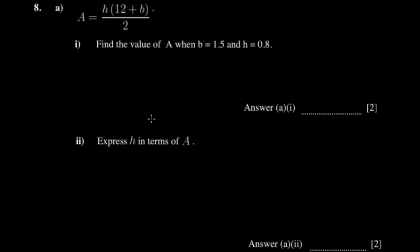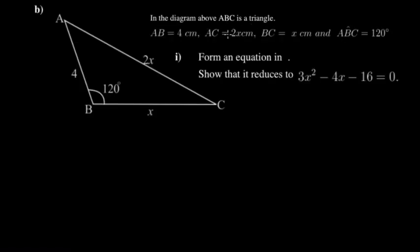The next part shows a triangle with given dimensions, and you're told it reduces to a specific equation. I always teach my students: if you have an angle with two sides sandwiching that angle — like 120 degrees here — you apply the cosine rule. If you have an angle and its corresponding opposite side, that's the sine rule. Here, two sides sandwich the 120-degree angle, so it's the cosine rule.